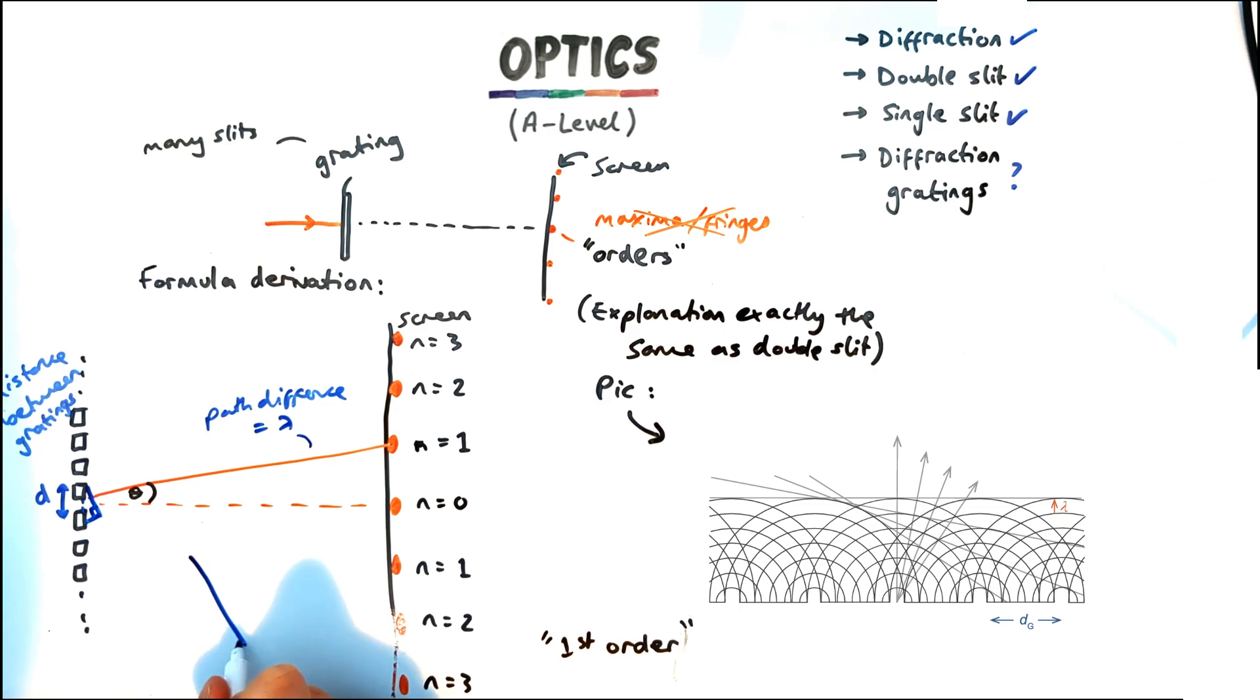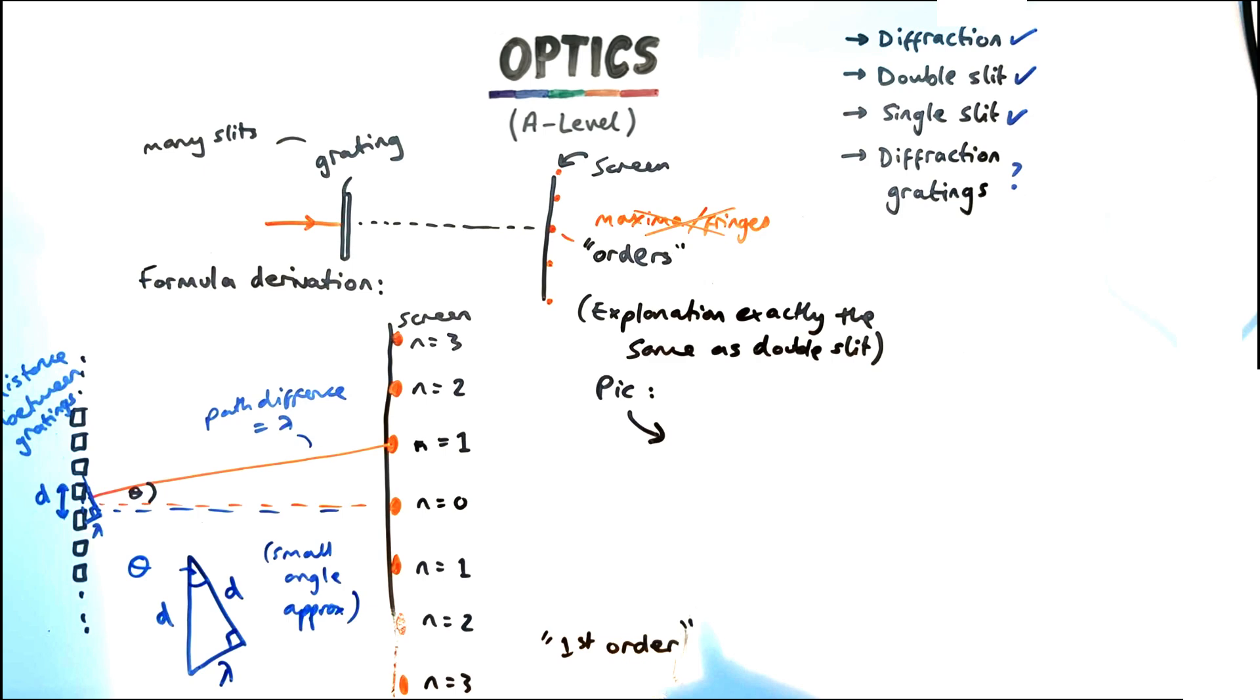So looking at this little triangle we're left with down here and the angle again we use small angle approximation. This angle will be very small and we can say that d the distance between the two of the gratings is equal to also the hypotenuse and that means that the one wavelength on the other side is our opposite.